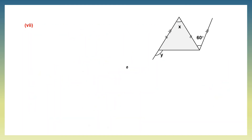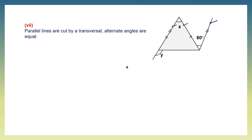Question 7. Here we can see two parallel lines cut by a transversal. Using the property that alternate angles are equal when parallel lines are cut by a transversal, angle x and angle 60 are alternate angles. Therefore angle x equals 60 degrees.